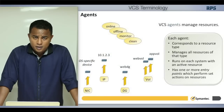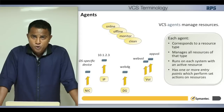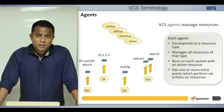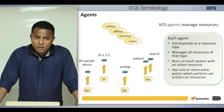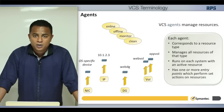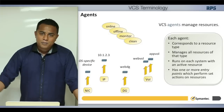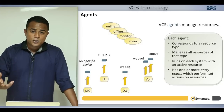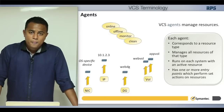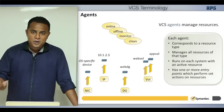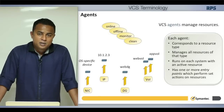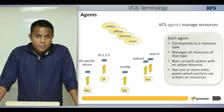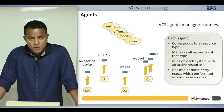The final terminology is the agent. An agent is like a device driver — it is used to manage a resource type. For VCS to manage an IP resource, it needs to know the adapter name, netmask, and other parameters. Similarly, to mount a file system VCS needs the mount point, what to mount, and the file system type. The agent tells VCS how to manage a resource type.